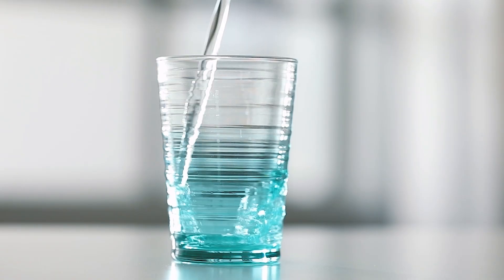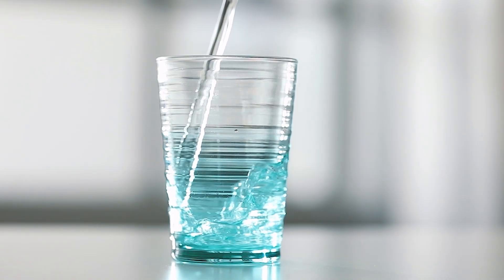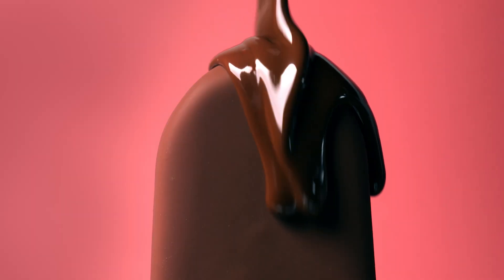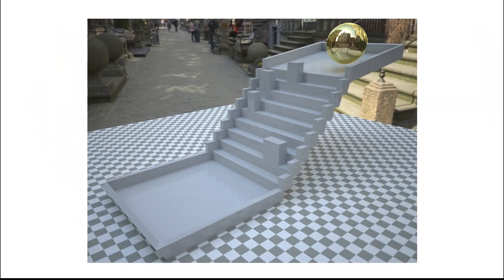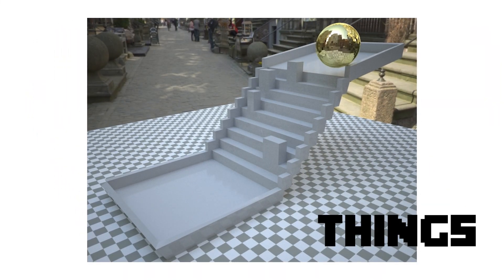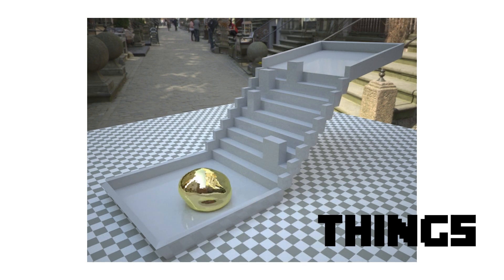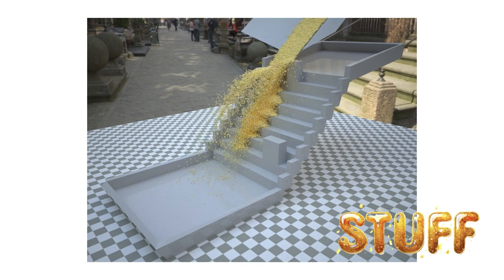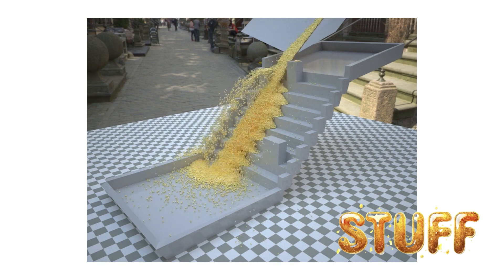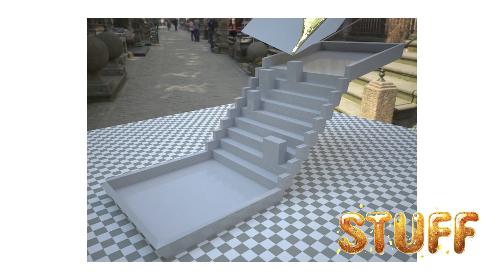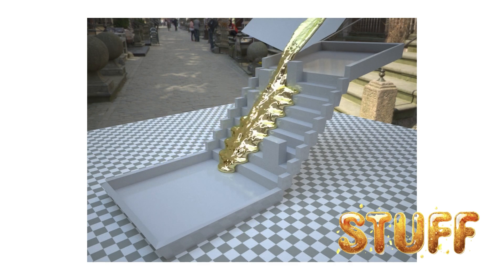Our world is filled with stuff that has different physical properties and invites different actions than rigid things. To test how stuff like this is represented in the human brain, we created animations of stuff and things. For the purpose of the study, we defined things as both rigid and deformable objects, and stuff as granular and liquid substances. The videos are identical except for the materials being tested.